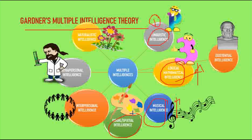Visual or spatial intelligence — these people are good at remembering images, figures, faces, and fine details. They are architects, painters, designers, surgeons, pilots, drivers, and sailors. Examples include Michelangelo and Leonardo Da Vinci, who had this spatial intelligence.